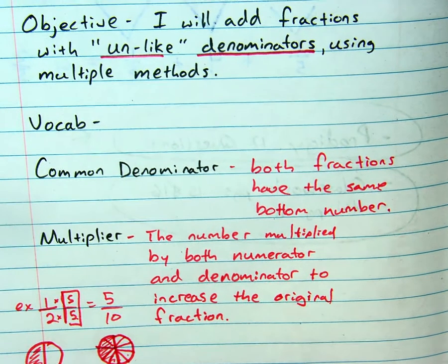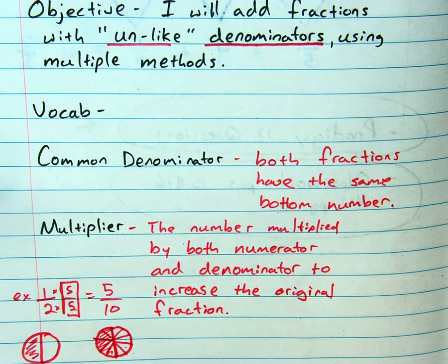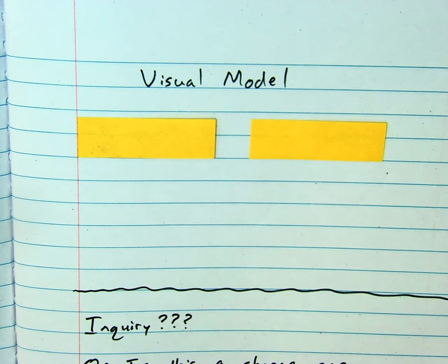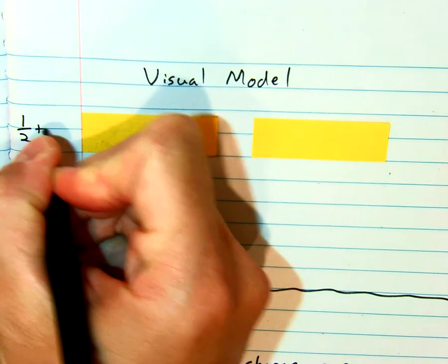So they represent the same amount. The bigger number has more pieces. And in this example, five was our multiplier. If you need to, you can pause. Otherwise, continue on. Our first method, I want you to look at this as a visual model. And we're going to use the example of one half plus one third. We're going to use two unit fractions here.